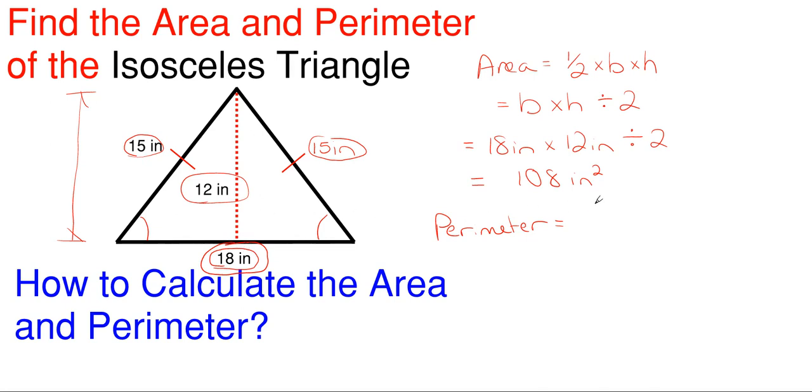Perimeter will always be measured along the outside. So we have 15 inches plus 15 inches plus the 18 inches at the bottom. My perimeter will be 48 inches.